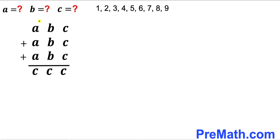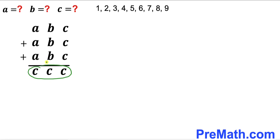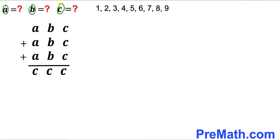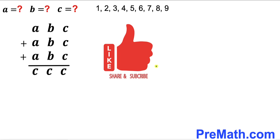Welcome to Pre-Math. In this video we have three-digit integer ABC added up three times, and our answer is supposed to be a three-digit number as well, such that the result is CCC. The ones column contains C, the tens place value is B, and the hundreds place value is A. The values of A, B, and C are supposed to be either 1 through 9. Our task is to find the values of A, B, and C.